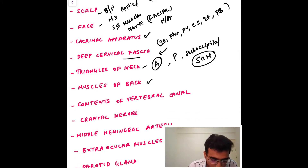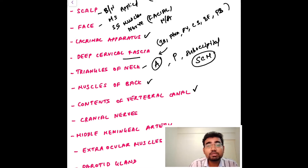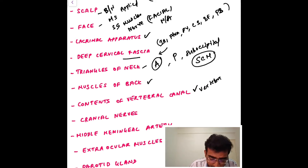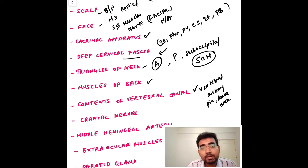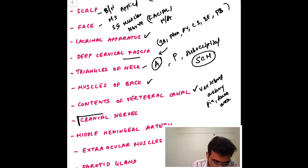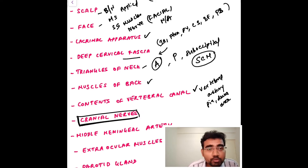The next topics are the muscles of the back and the contents of the vertebral canal, which mainly include the vertebral artery, and the vertebral pia mater, dura mater, and arachnoid mater. The next very important topic is the cranial nerves — you should be aware of all 12 cranial nerves from the olfactory to the hypoglossal.